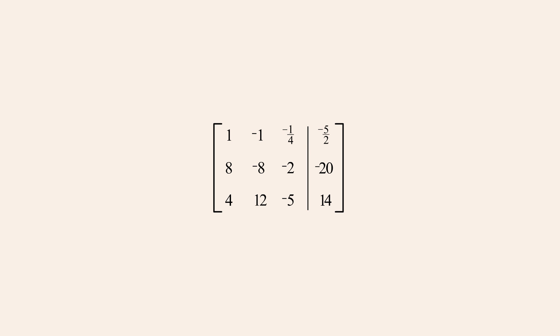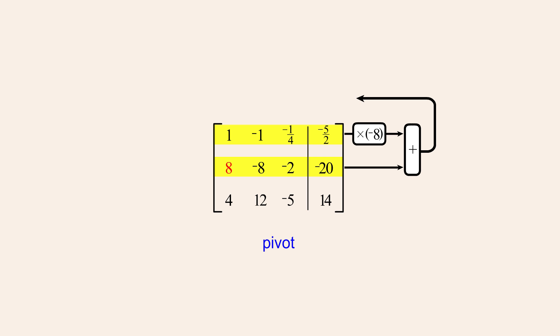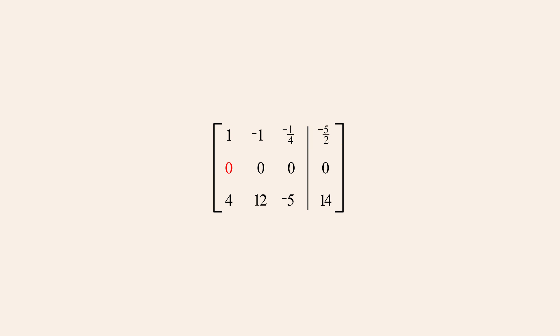Next, we change the entry below that one to a zero using a pivot operation to add negative eight times row one to row two. But in addition to zeroing the leftmost entry of row two, this operation causes every entry in row two to become zero. The reason this happened is that rows one and two were multiples of each other. Therefore, whatever multiplier was used in the pivot operation to zero one entry in row two ended up zeroing every entry in row two.